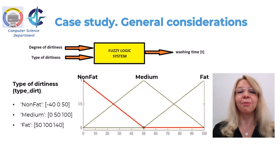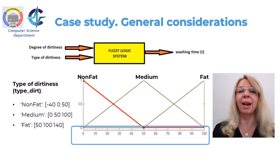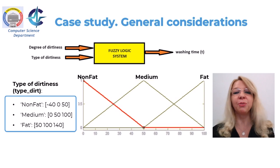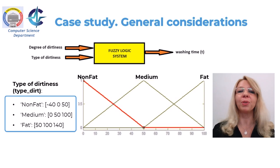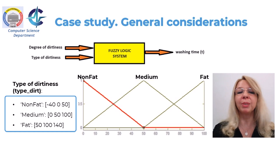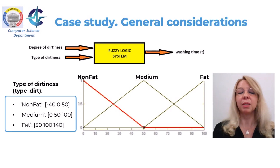Now let us define the fuzzy sets for the input variable type of dirtiness. The universe of discourse is also defined as a percentage from 0 to 100 with respect to the term FAT. Three fuzzy sets are defined — non-FAT, medium, and FAT — to create a fuzzy partition. The central values are 0%, 50%, and 100%, and all these parameters will be used in the membership operator from the fuzzy lib library. The parameters are: non-FAT from minus 40 to 50, medium 0 to 100, and FAT from 50 to 140, as shown in the figure.